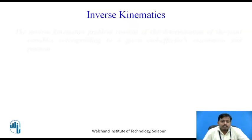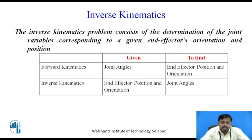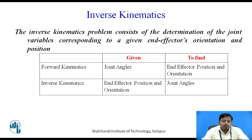Inverse kinematics consists of determination of joint variables corresponding to a given end effector's orientation and position. In forward kinematics, what is given are all the joint angles, and we find the end effector position and orientation. In inverse kinematics, it is the completely opposite — the end effector position and orientation are given, and we are required to find the joint angles theta 1 and theta 2.